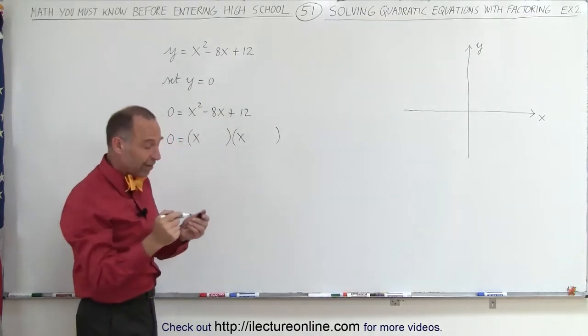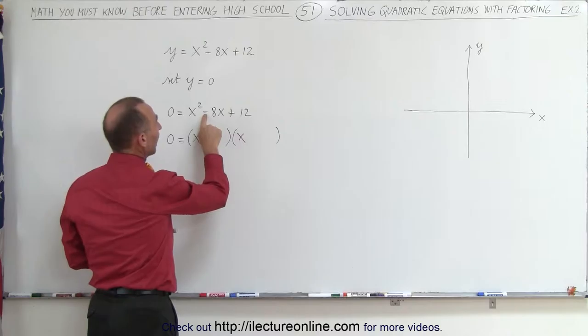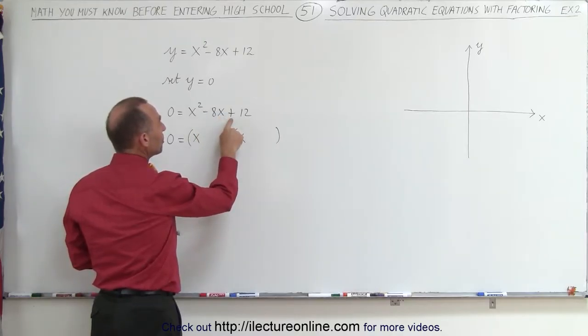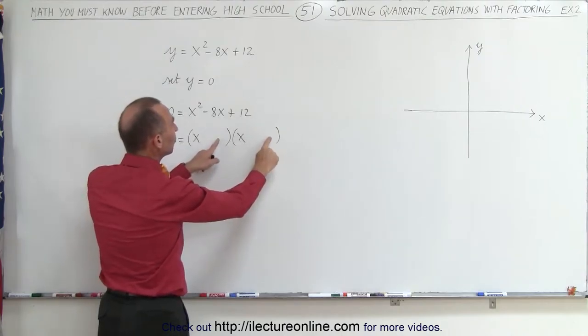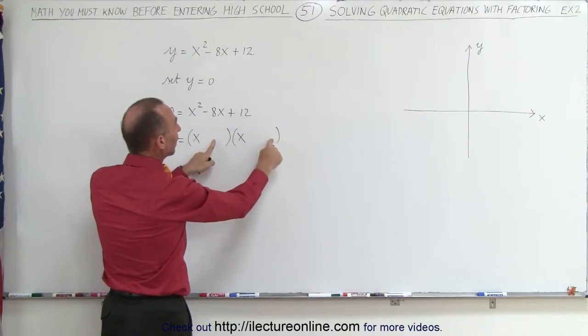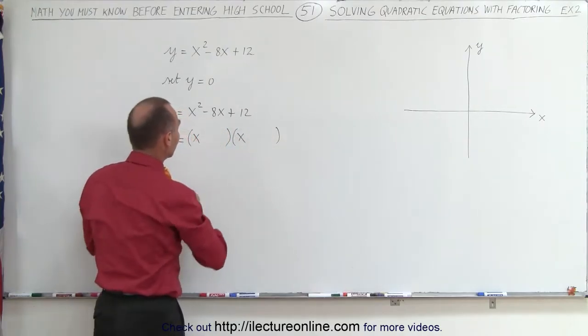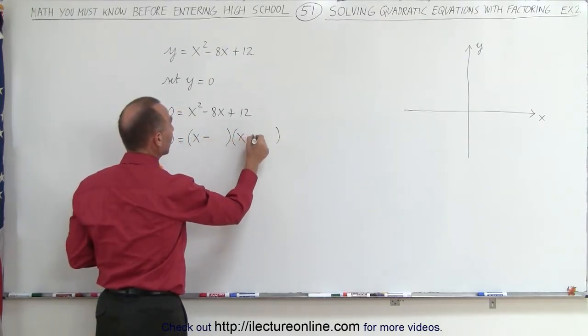To get the signs correct, notice that this is a negative and that's a positive, which means the only way to get a negative here and a positive there is for both of these numbers to be negative. When you multiply a negative times a negative, you get a positive, and when you add them together, you get a negative. So the signs must be negative and negative.